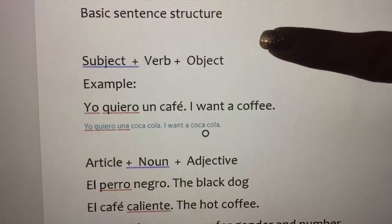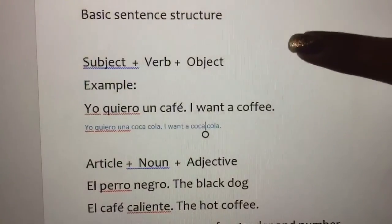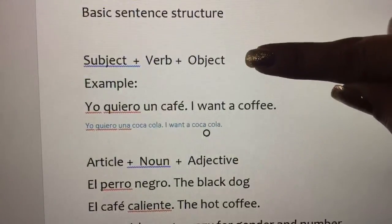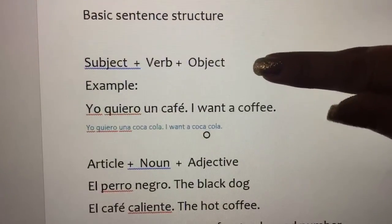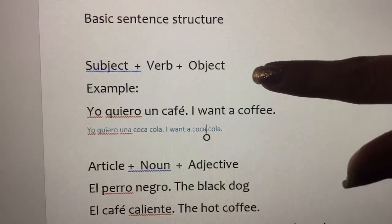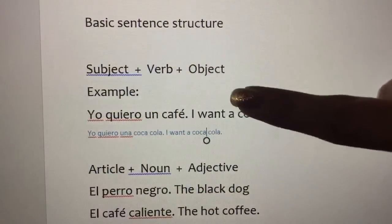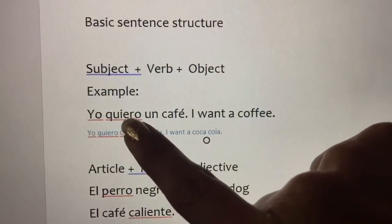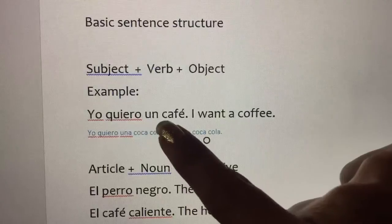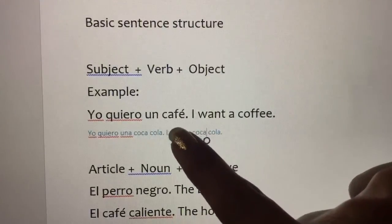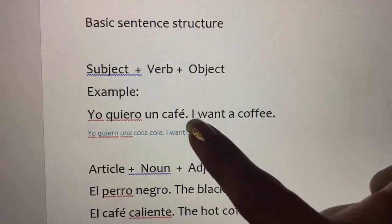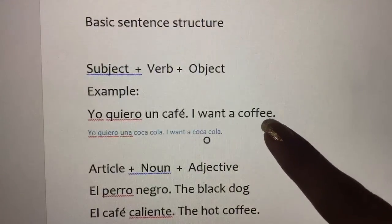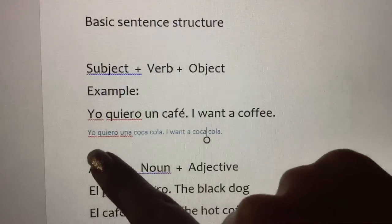The basic sentence structure in Spanish is, just as in English, subject, verb, and object. If you don't know what object is, there's another video on this channel where I explain objects. So an example: Yo, subject, quiero, verb, un café, object. I, subject, want, verb, a coffee, object.